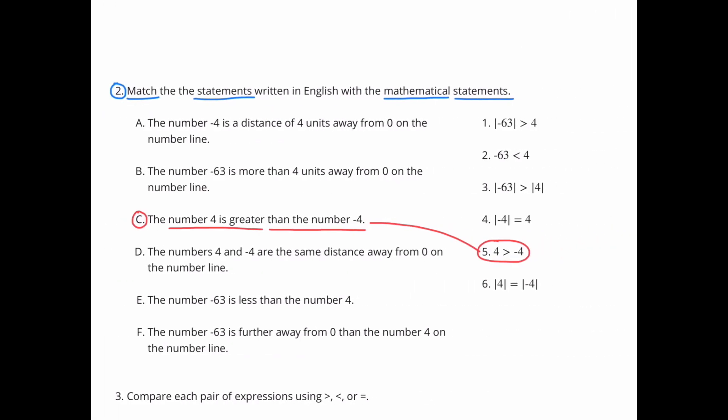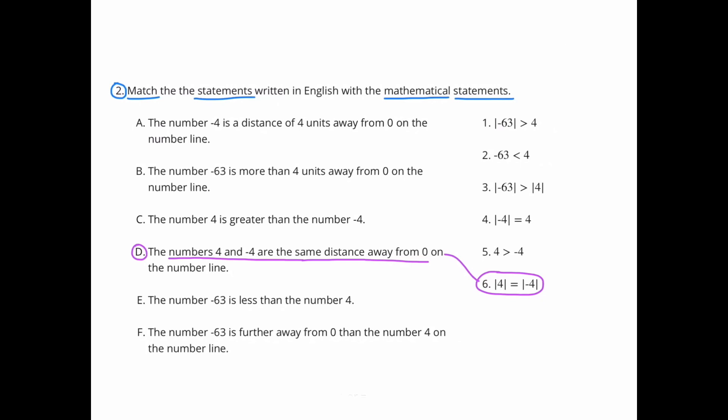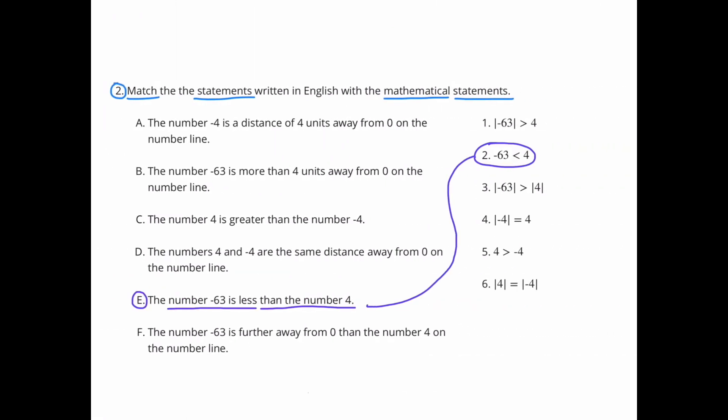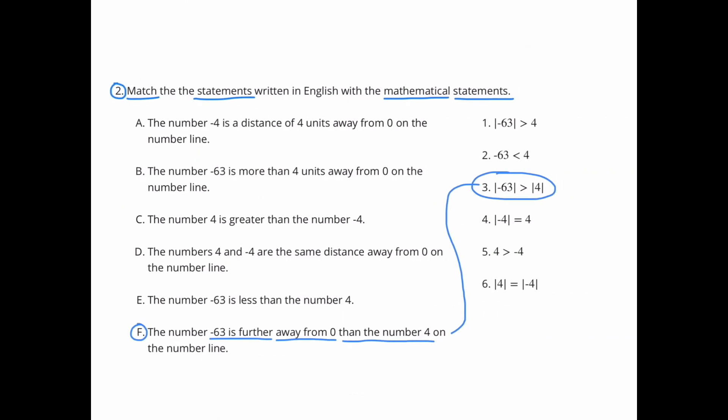C: The number 4 is greater than the number negative 4. That matches with statement 5: 4 is greater than negative 4. D: The numbers 4 and negative 4 are the same distance away from 0 on the number line. That matches with statement 6: the absolute value of 4 is equivalent to the absolute value of negative 4. E: The number negative 63 is less than the number 4. F: The number negative 63 is further away from 0 than the number 4 on the number line. That matches with statement 3: the absolute value of negative 63 is greater than the absolute value of 4.